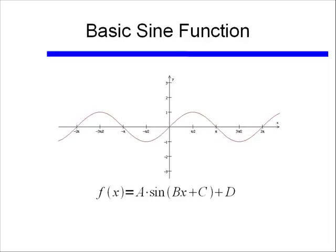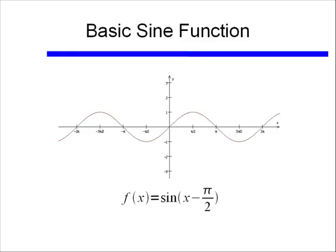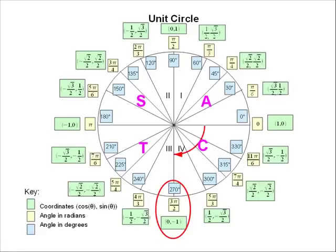We've talked about a, b, and d. The 'c' term produces what we call a phase shift. Just like 'd' shifted the function vertically, the phase shift moves the function horizontally left or right. Let's look at f(x) = sine(x − π/2). At x = 0: sine(0 − π/2) = sine(−π/2). A negative angle is a clockwise rotation, so −π/2 ends at 3π/2 on the unit circle, giving sine = −1.